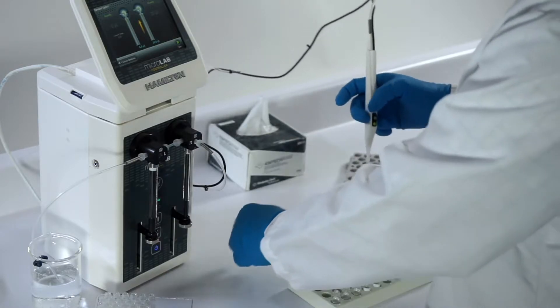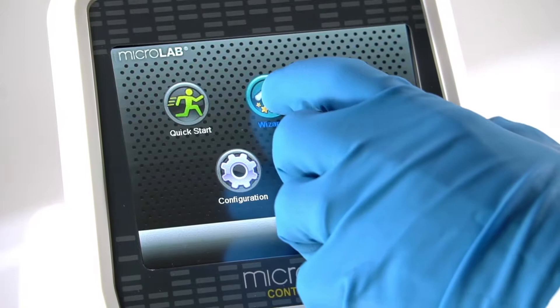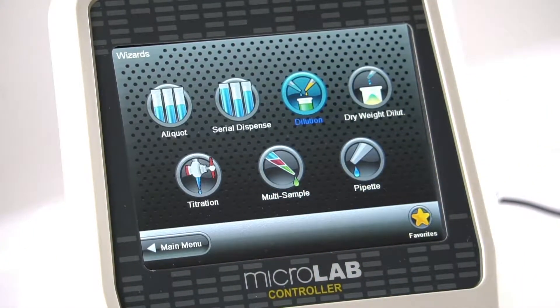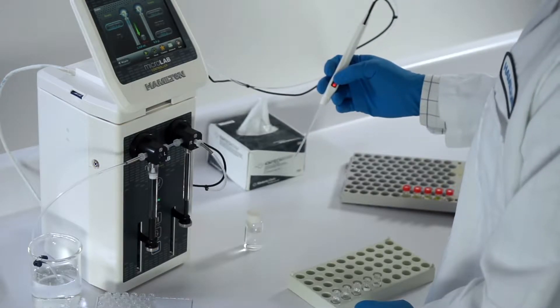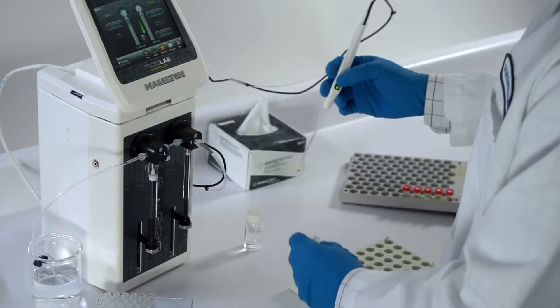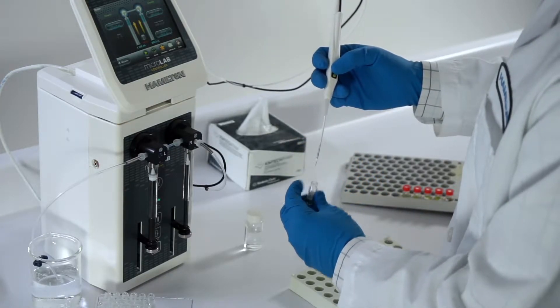After internal standard spiking, the unknown samples can be diluted for analysis by using the dilution wizard again. The technician triggers the hand probe to aspirate the programmed amount of diluent into the tubing. Then the unknown samples are aspirated into the probe and then dispensed into a new auto-sampler vial.